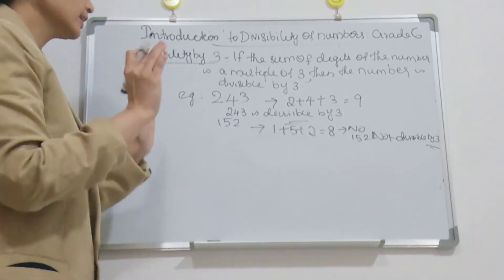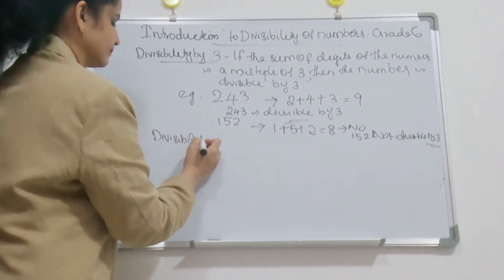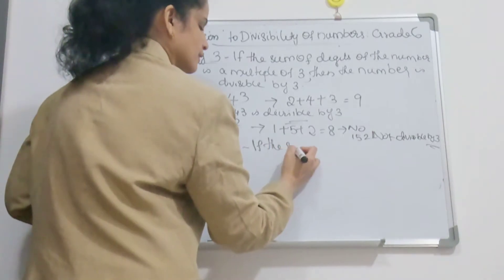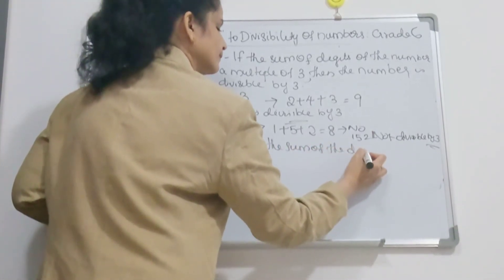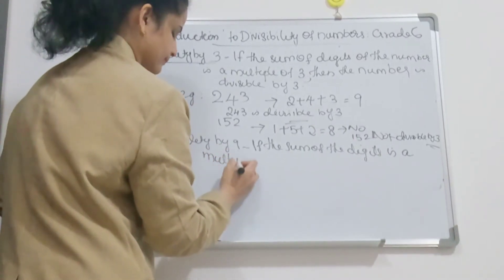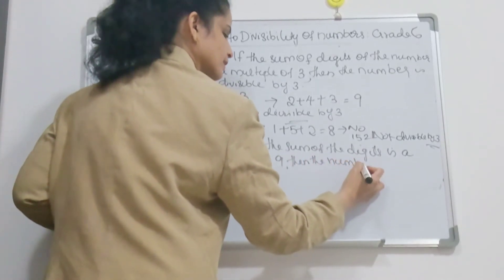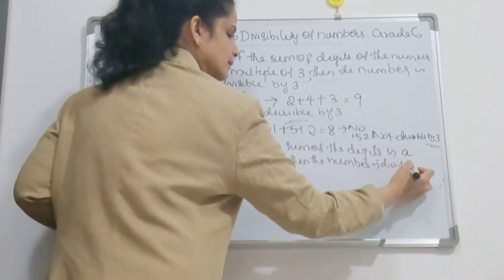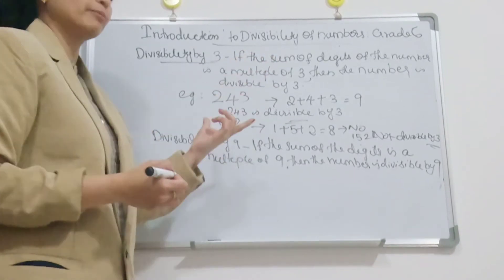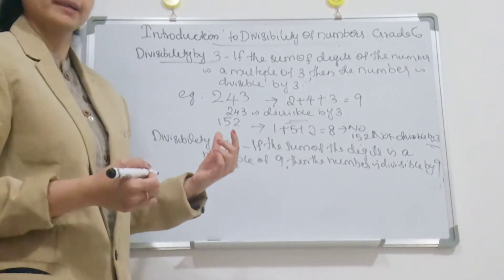Next, divisibility by 9. The same rule applies. If the sum of the digits is a multiple of 9, then the number is divisible by 9. Here for 3: if the sum of digits is a multiple of 3, the whole number is divisible by 3. Similarly, if the sum of digits is a multiple of 9, the whole number is divisible by 9. Same process.